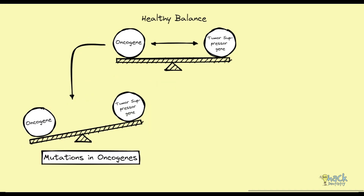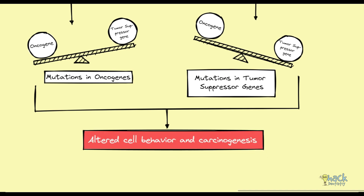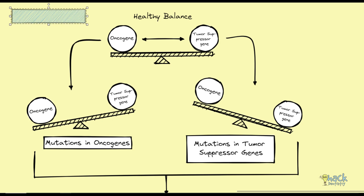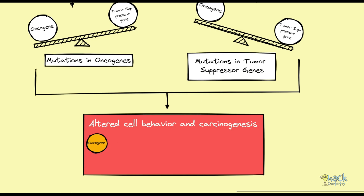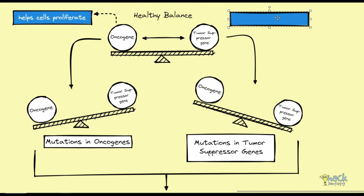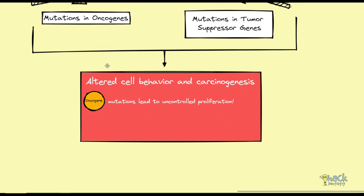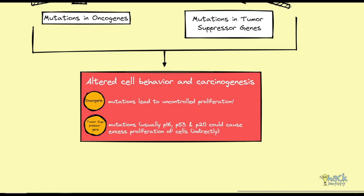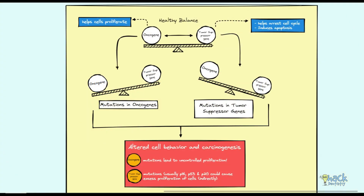Usually, there is a healthy balance of cell proliferation induced by oncogenes and cell cycle arrest by tumour suppressor genes. Mutations accumulating in oncogenes and tumour suppressor genes result in altered cell behavior and carcinogenesis. Oncogenes are proteins that help cells proliferate, and mutations in oncogenes could cause uncontrolled proliferation of cells. Tumour suppressor genes are proteins that help arrest the cell cycle and cause apoptosis when necessary. Mutations in tumour suppressor genes — usually p16, p53, and p21 — could cause uncontrolled proliferation of cells, as these mutations prevent tumour suppressor genes from functioning properly, thus indirectly helping proliferation.